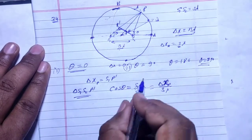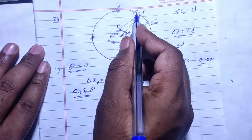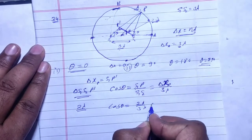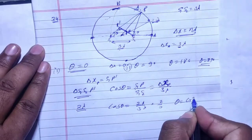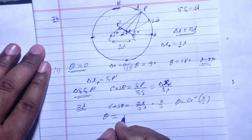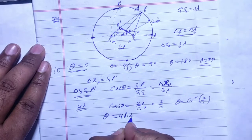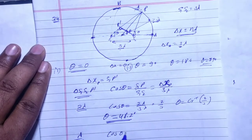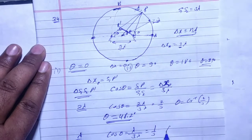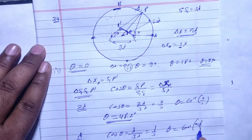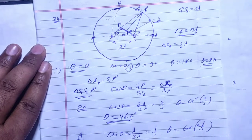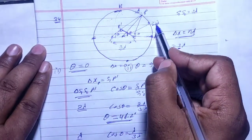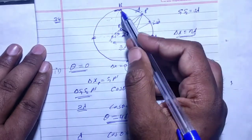cos theta is equal to base over hypotenuse in triangle s1s2P'. The base is the path difference and hypotenuse is s1s2 = 3 lambda. So cos theta equals path difference divided by 3 lambda. For path difference = 2 lambda: cos theta = 2lambda / 3lambda, giving theta ≈ 48.2 degrees. For path difference = 1 lambda: cos theta = 1/3, giving theta ≈ 70.5 degrees. So in one quadrant, constructive interference forms at 0 degrees, 48.2 degrees, 70.5 degrees, and 90 degrees.